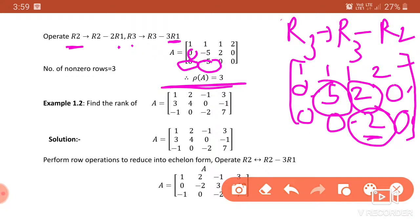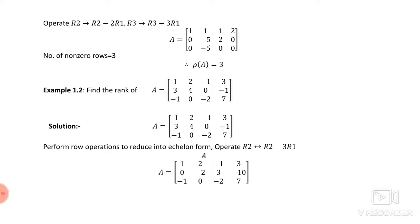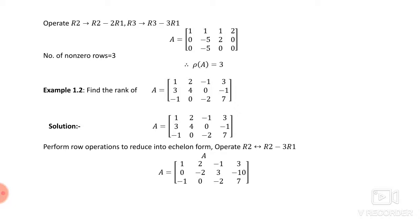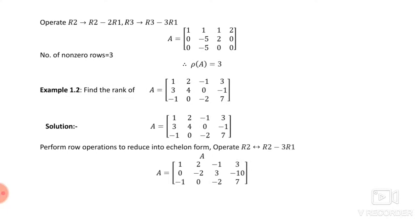All three rows are non-zero rows, so the rank of this matrix is 3. Similarly, for the second example, A = [1 2 -1 3; 3 4 0 -1; -1 0 -2 7]. We try to convert 3 and -1 into 0 using R2 → R2 − 3R1, giving us [1 2 -1 3], [0 -2 3 -10], [-1 0 -2 7].